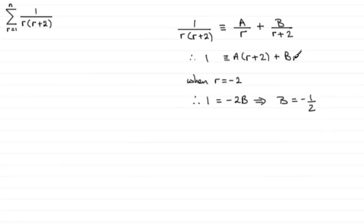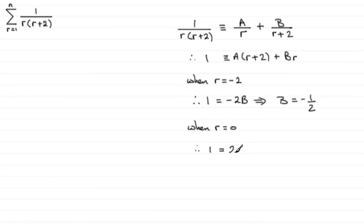If we set r equal to 0, it eliminates the B term. We get 1 equals A times (0+2), that's 2A, and B times 0 is 0. So it follows that A must be equal to one half.